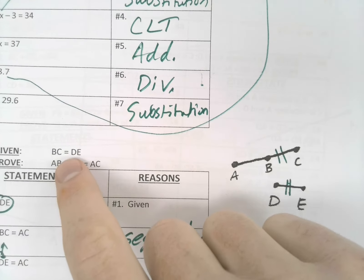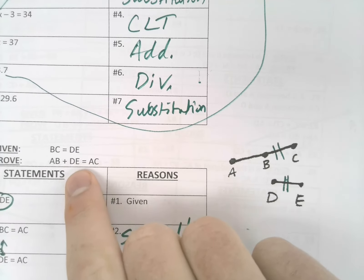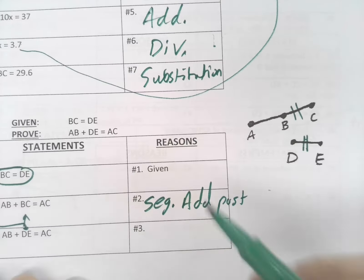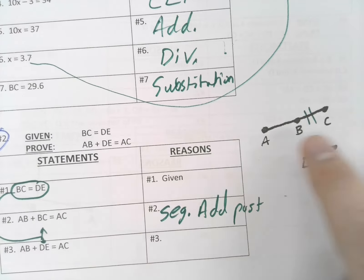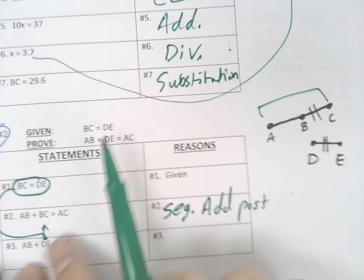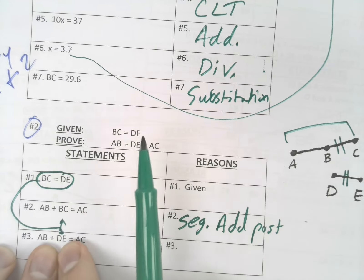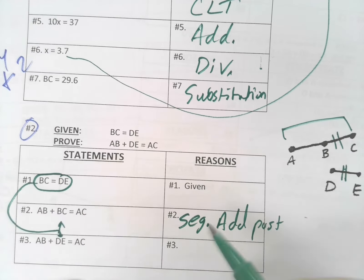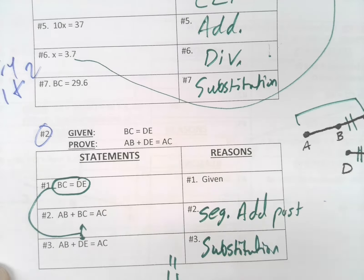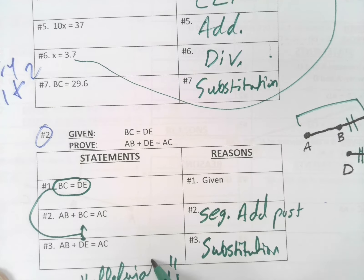How about number two? We're given that BC equals DE, and we're proving that AB plus DE equals AC. So we use seg add post to say part plus part equals whole. And then how did we change BC to DE? If we knew they were the same, we used substitution. Hope you went two for two there, guys.